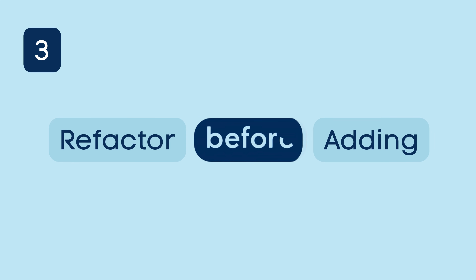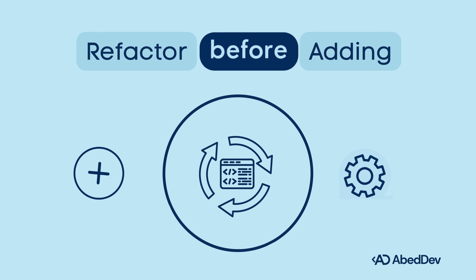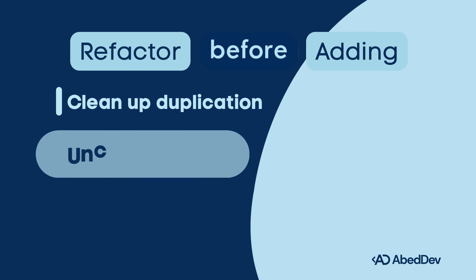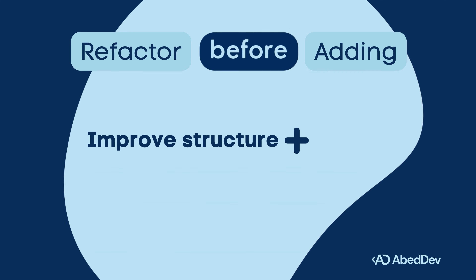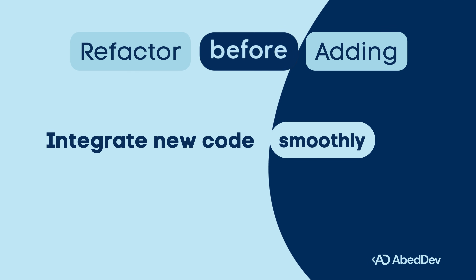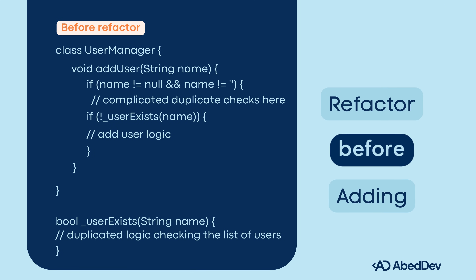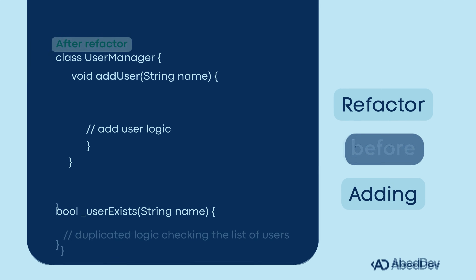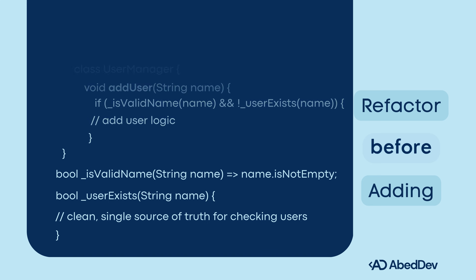Refactor before adding. Before adding features or fixing bugs, refactor related code first. Clean up duplication, outdated patterns, and unclear intent. Improve structure and naming for better readability. Integrate the new code smoothly, without hacks or shortcuts. Before adding any new user-related logic, you clean up the validation logic, making future changes safer and simpler.